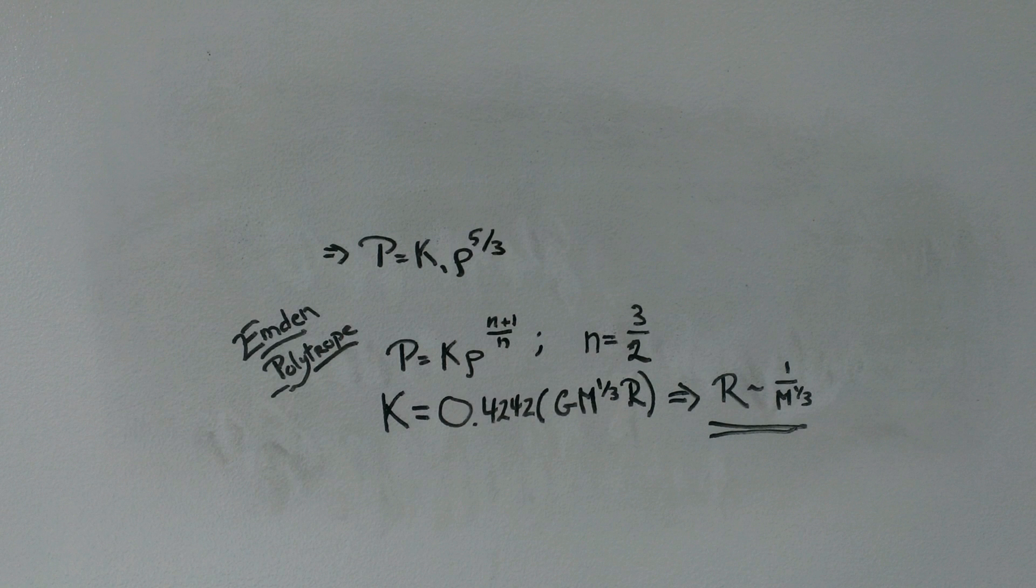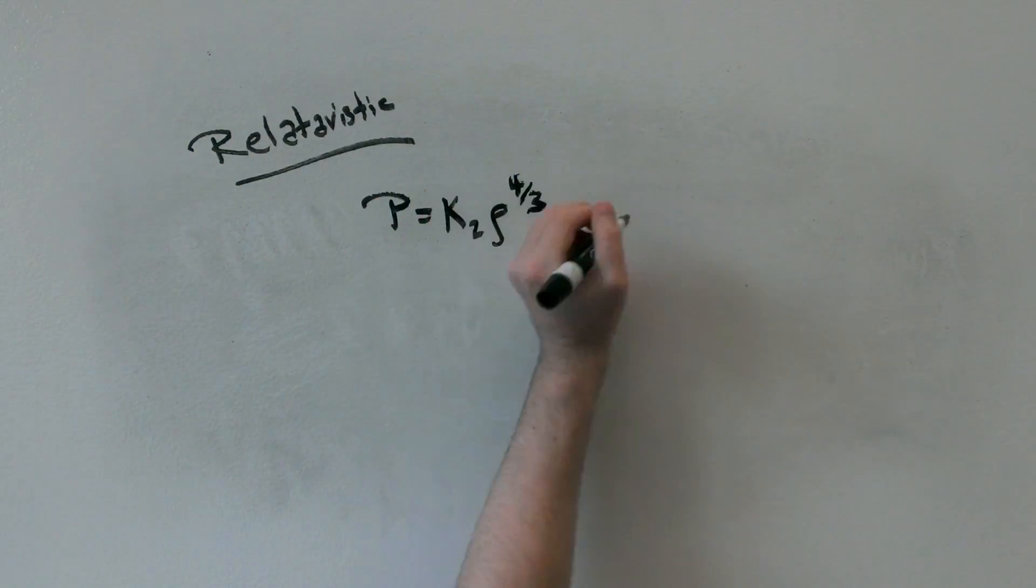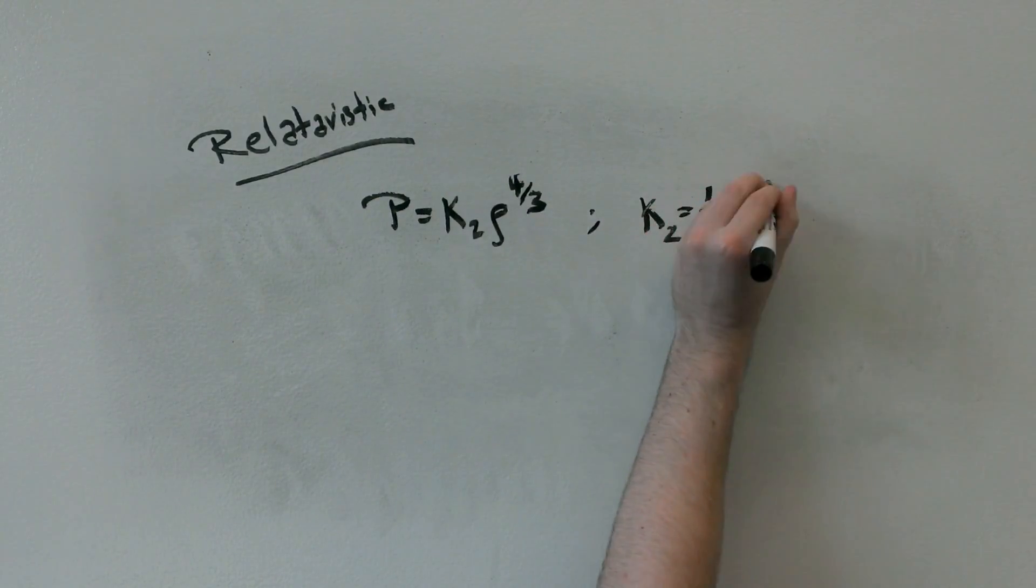But, like before, this is assuming non-relativistic speeds, and a simple correction must be made. When we do account for relativistic velocities, we get the Emden polytrope again, but this time, we have an index n equals 3.